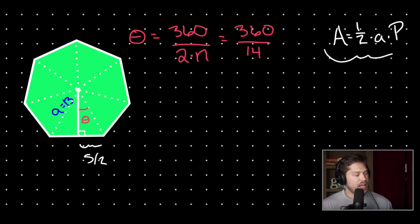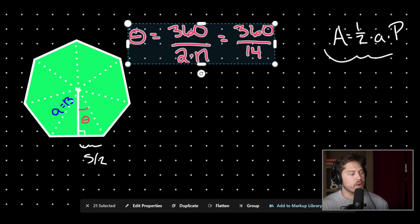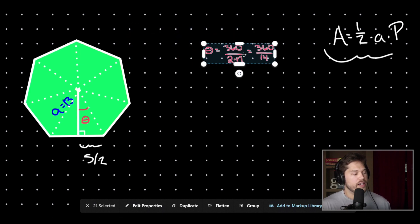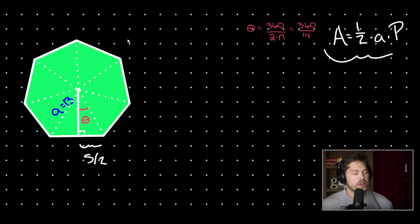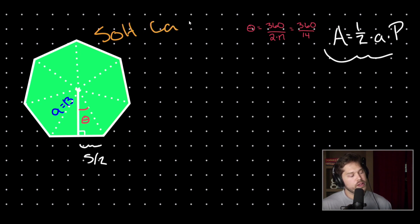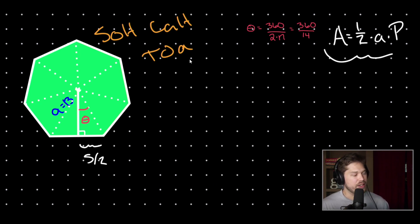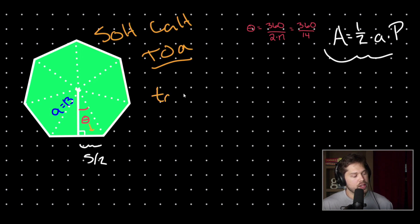Now we want to find our side length using trigonometry. Think back to SOHCAHTOA — which trig function are we going to use? If you said tangent, give yourself a pat on the back, because that is exactly right. In terms of theta, we are searching for our side length, which is opposite theta, and we are given our apothem, which is adjacent to theta.